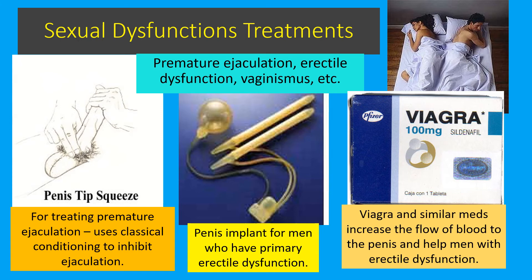Men with erectile dysfunction may have primary erectile dysfunction, meaning a man can never get an erection — for example, due to a spinal cord injury. In that case, a man can have a penile implant with tubes or a device implanted under the skin of the penis that can be pumped with fluid to make the penis erect. For secondary erectile dysfunction — where a man sometimes has trouble getting an erection but not always — there are medicines like Viagra, sometimes called the little blue pill, which increase blood flow to the penis and help produce an erection.